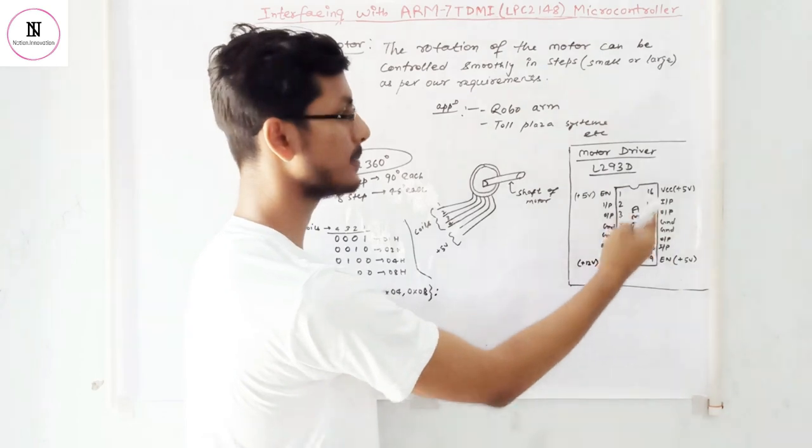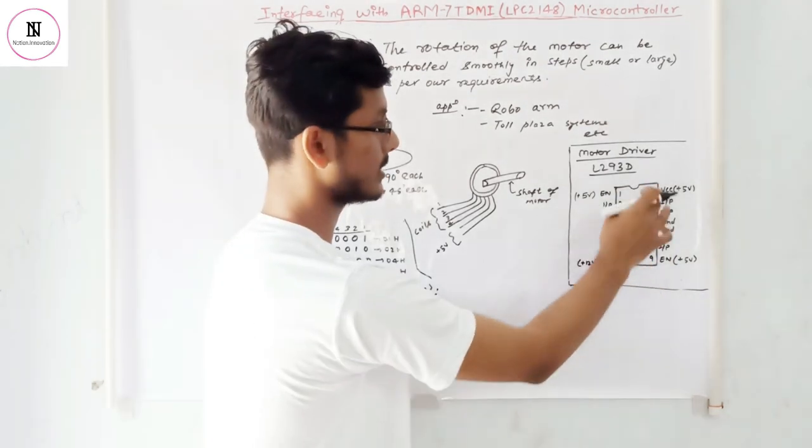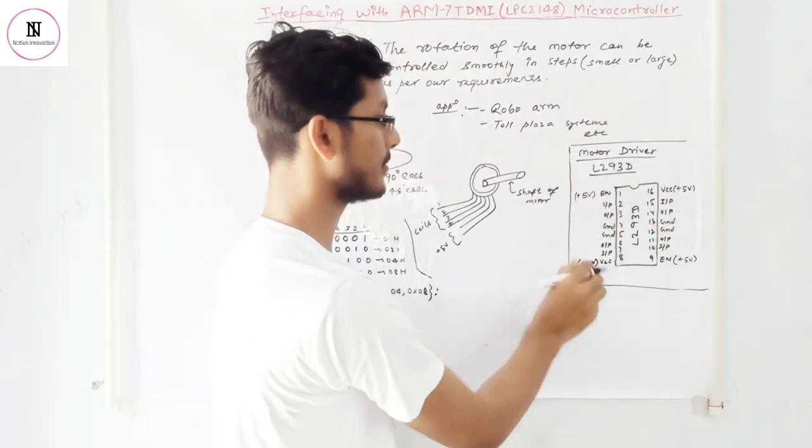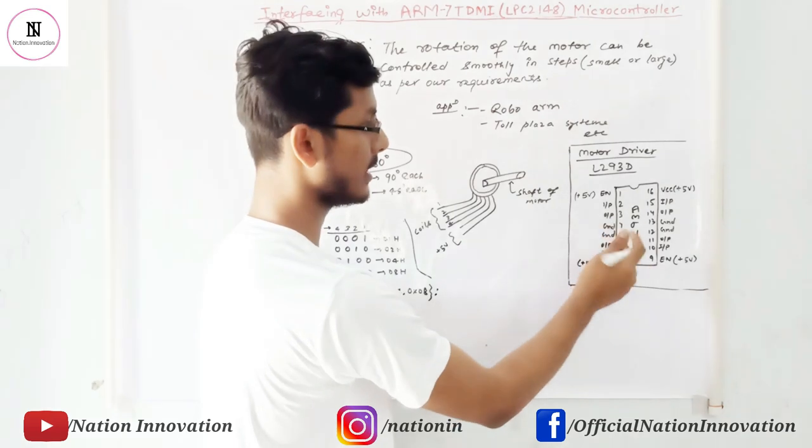This is 16 pin IC. The first pin, ninth pin and the 16th pin requires generally 5 volt. This is for enables and the eighth pin is VCC supply.